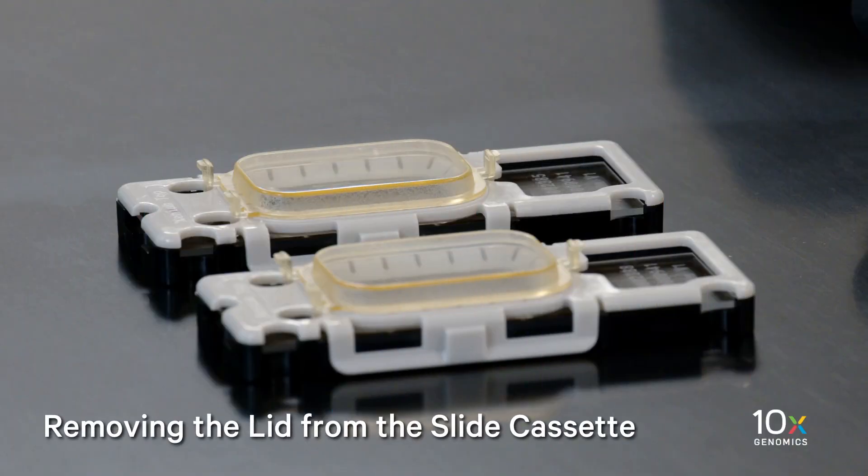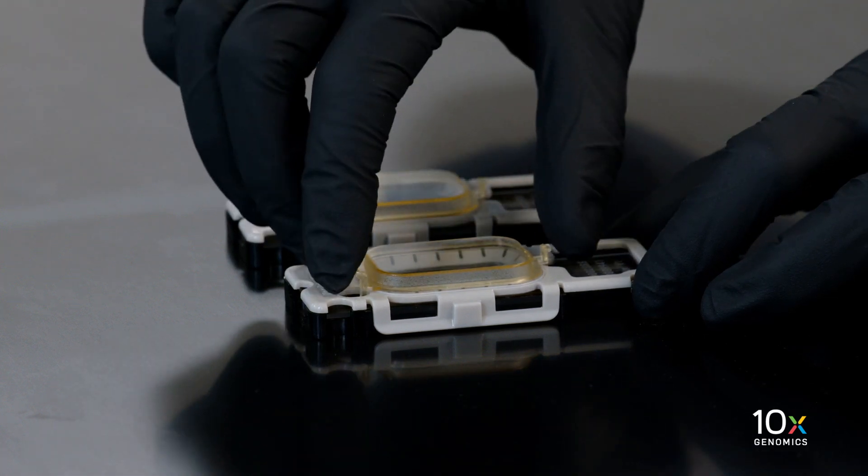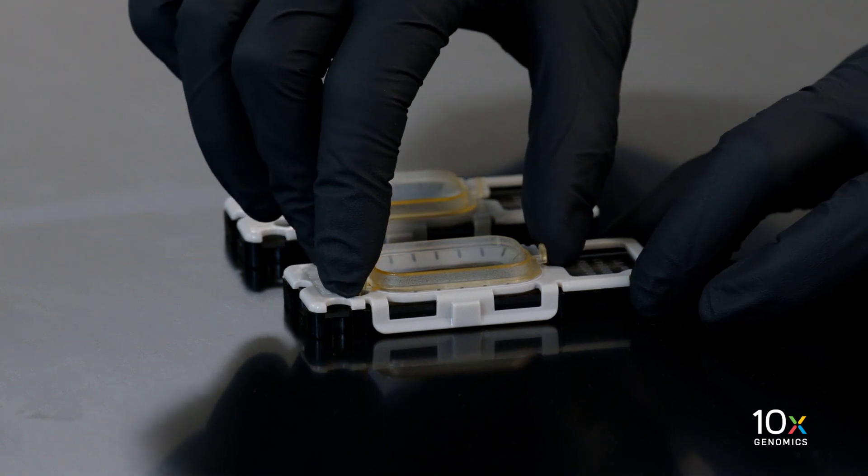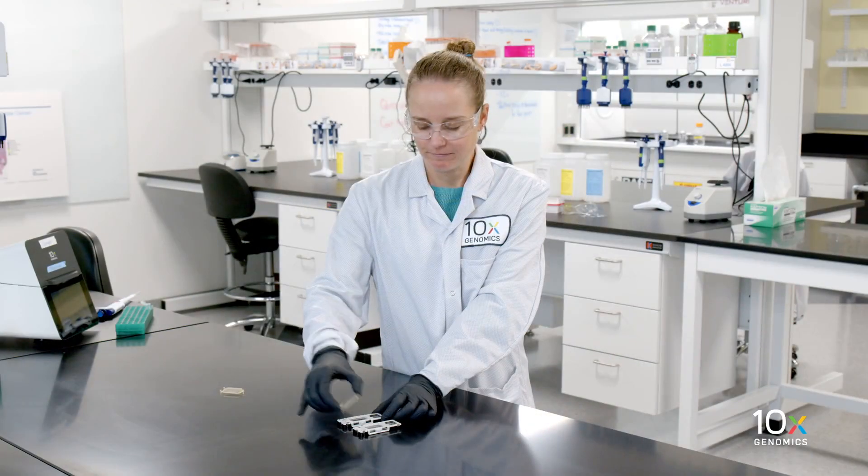After incubation on the thermal cycler, we will remove the slide lid. Securely hold the cassette on a flat surface. With the other hand, push on the top of the two upper tabs with index and middle fingers. Use your thumb to push in on the lower clip. While maintaining inward pressure, pull upward with your thumb until the lower clip disengages. Ensure that no liquid splashes out of the well.